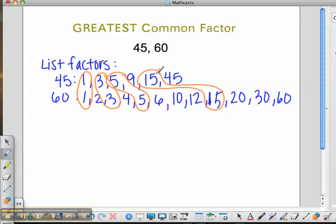So, the greatest common factor is the highest of the common factors when you are listing the factors. So, the greatest common factor between 45 and 60 is 15.